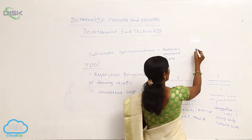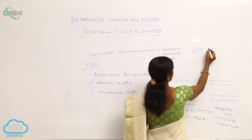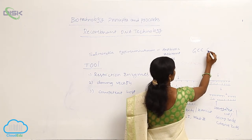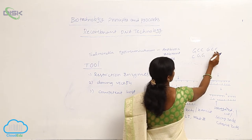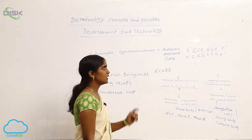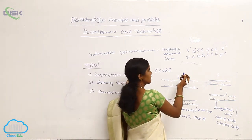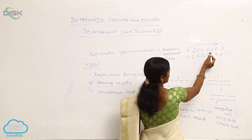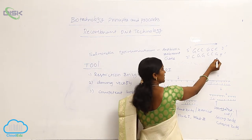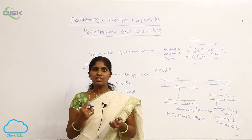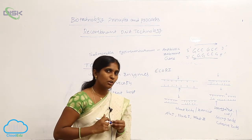For example, take the sequence GCC-CGG. On the upper strand the reading frame is GCCGGC, and on the lower strand the reading frame is also GCCGGC. The reading frames of both strands are the same — these types of sequences are called palindromic sequences.